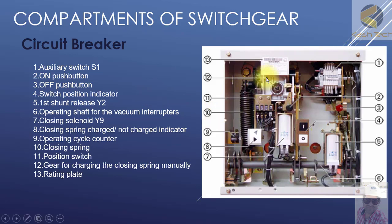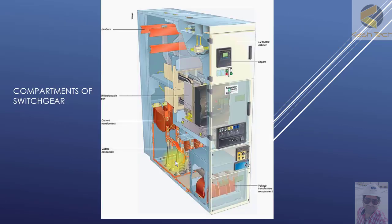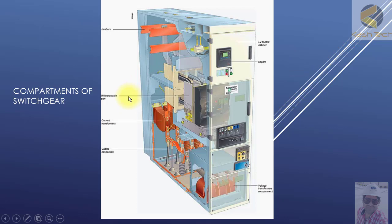After that, we will see what is included in the low voltage compartment. The low voltage compartment includes control and protection circuitry, space heaters, and measurement devices such as ammeters, voltmeters, and resumeters.